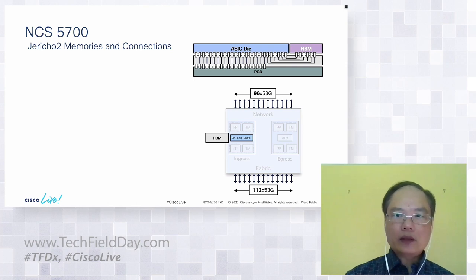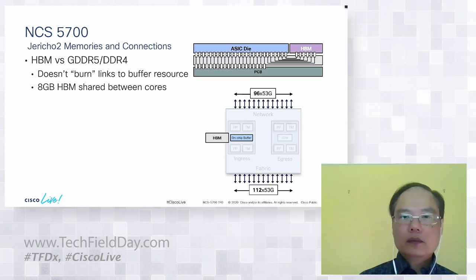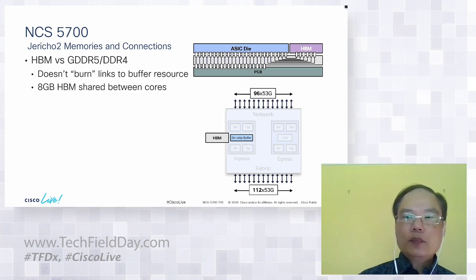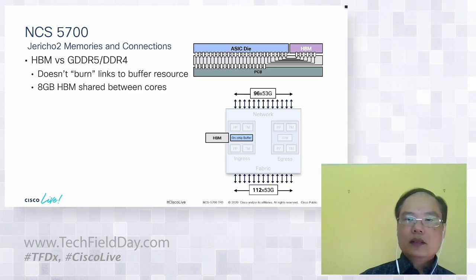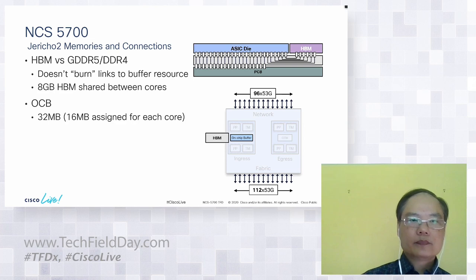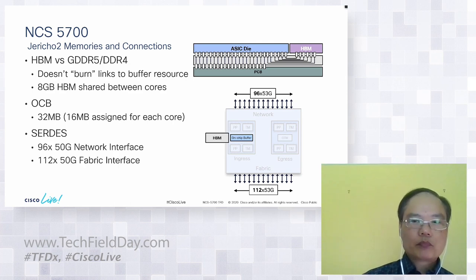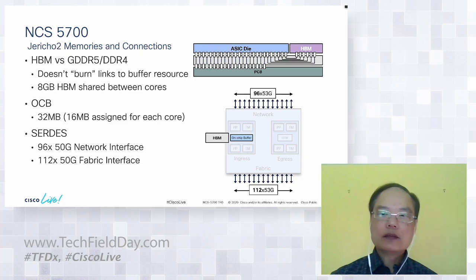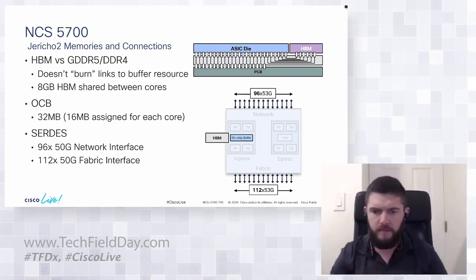Jericho 2 uses a newer memory technology called HBM or high bandwidth memory for its external buffer. HBM basically stacks on top of the NPU package and therefore does not burn links on the PCB. HBM enables higher bandwidth with lower power consumption. A total of eight gigabytes is supported and shared between the two cores. Jericho 2 also integrates 32 megabytes of on-chip buffer with 16 megabytes assigned to each core. Jericho 2 is 400 gig optimized with all 50 gig SerDes — 96x50 gig SerDes for network interface and 112x50 gig SerDes for the fabric interface.